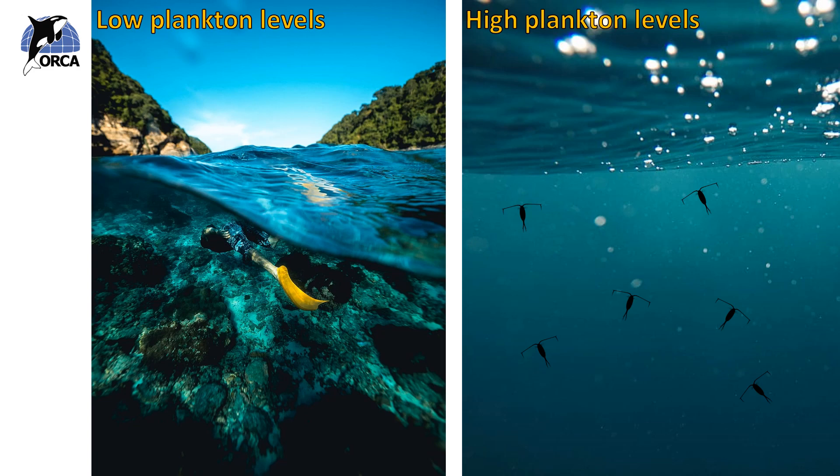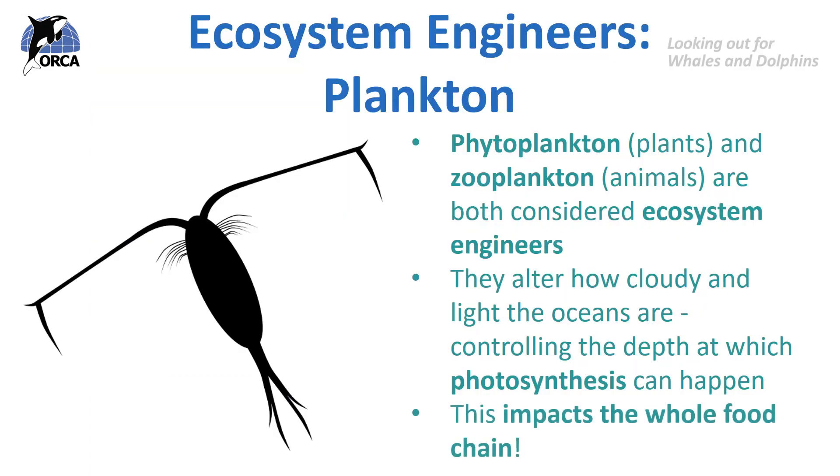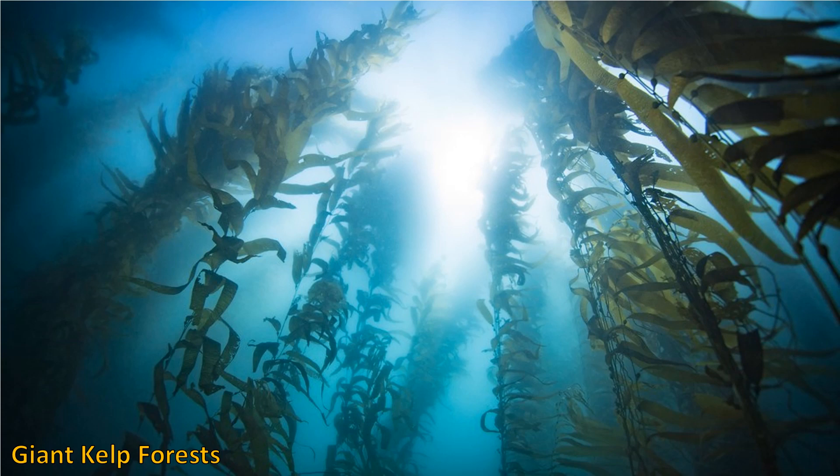Giant kelp are a good example of autogenic ecosystem engineers in the ocean. As they grow and become larger, their living and dead tissues create habitats for other organisms to live on or in, such as sea urchins, lobsters, sharks and squid.